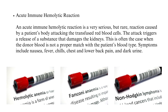An acute immune hemolytic reaction is a very serious but rare reaction caused by a patient's body attacking the transfused red blood cells, triggering a release of a substance that damages the kidneys. This is often the case when the donor blood is not a proper match with the patient's blood type. Symptoms include nausea, fever, chills, chest and lower back pain, and dark urine.